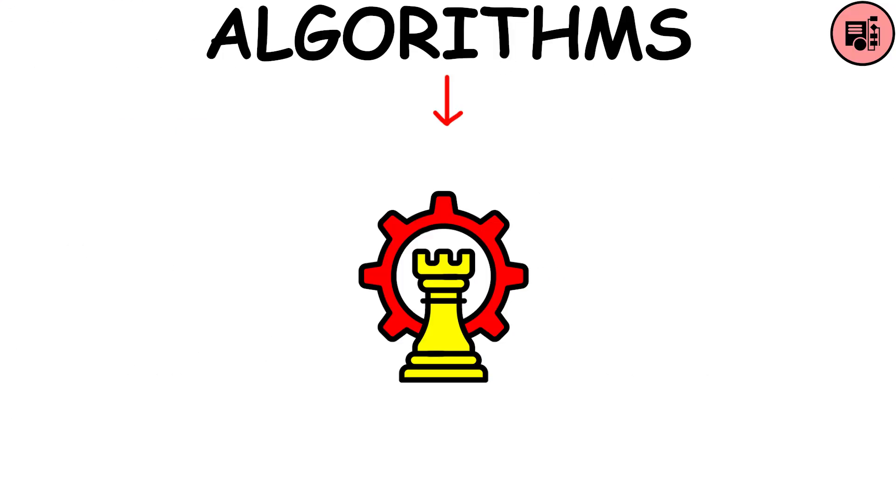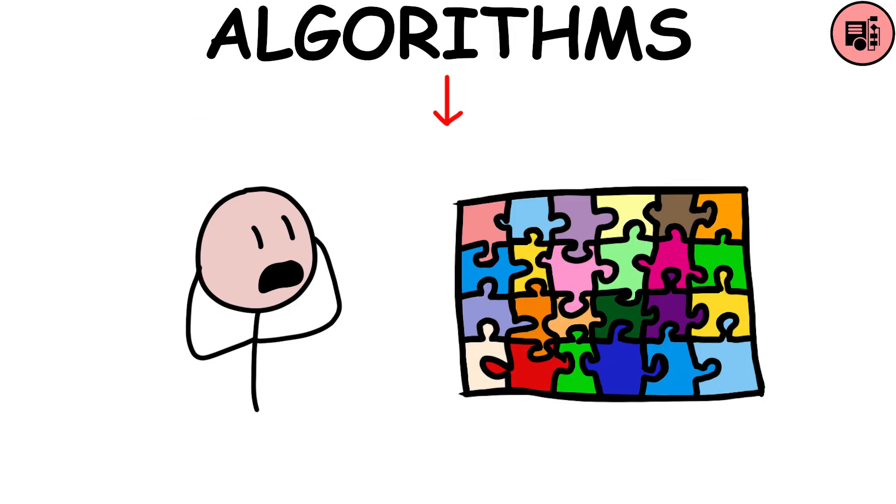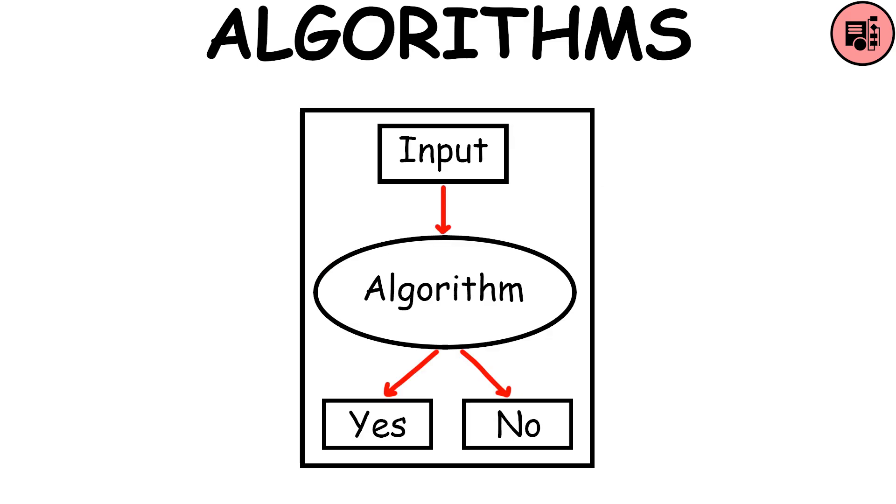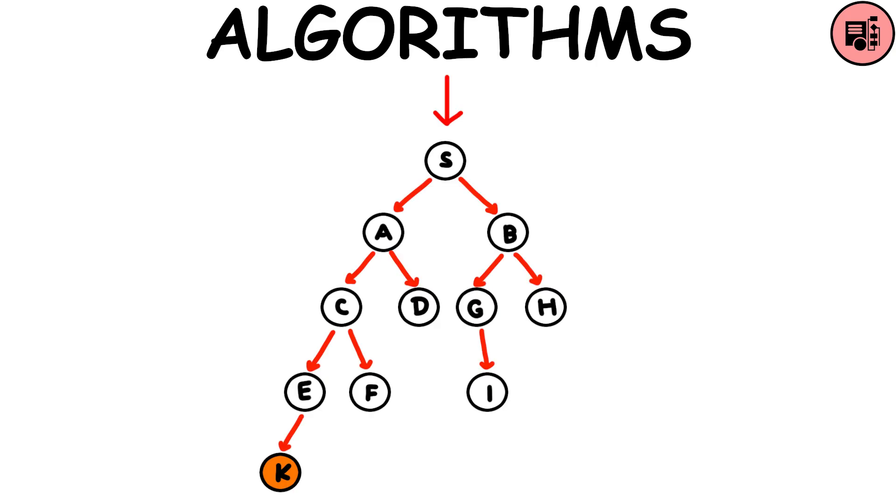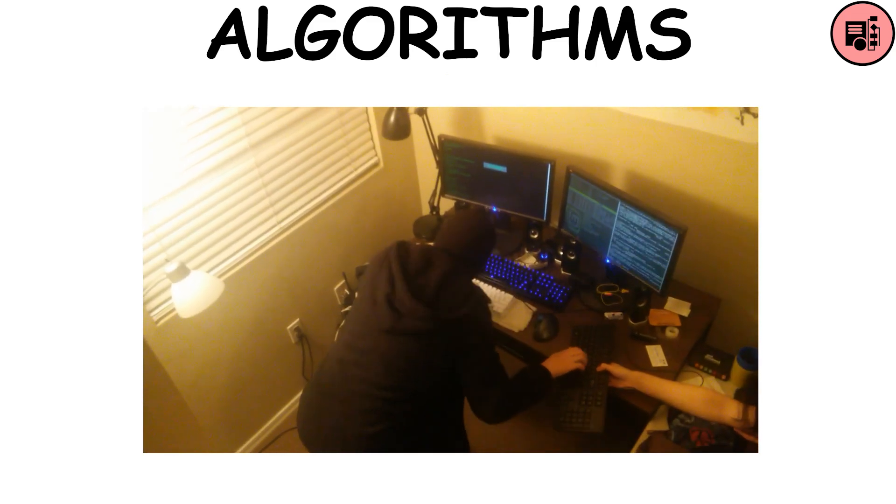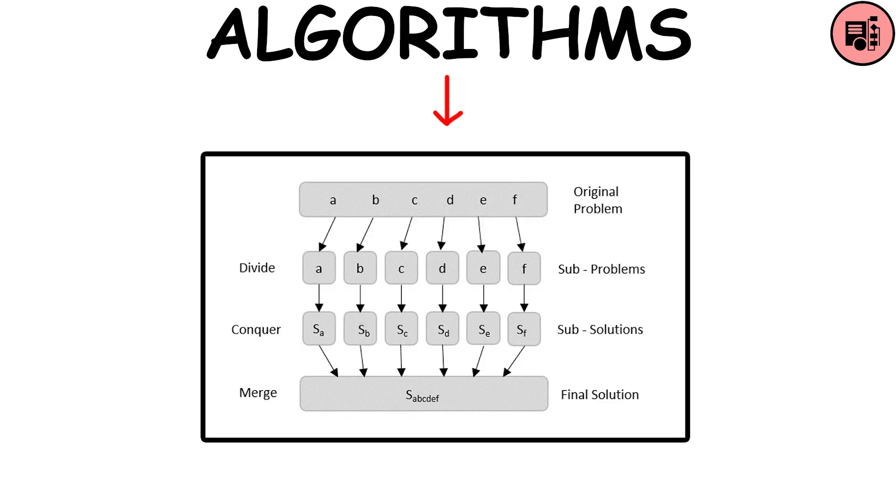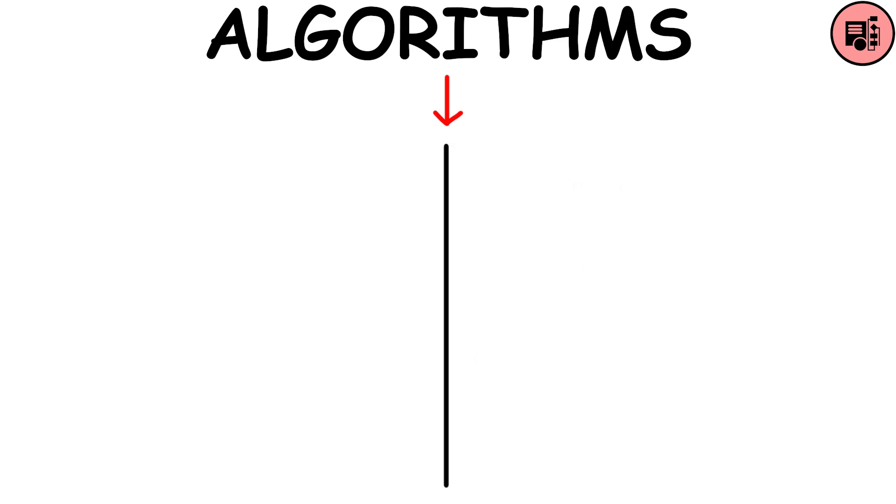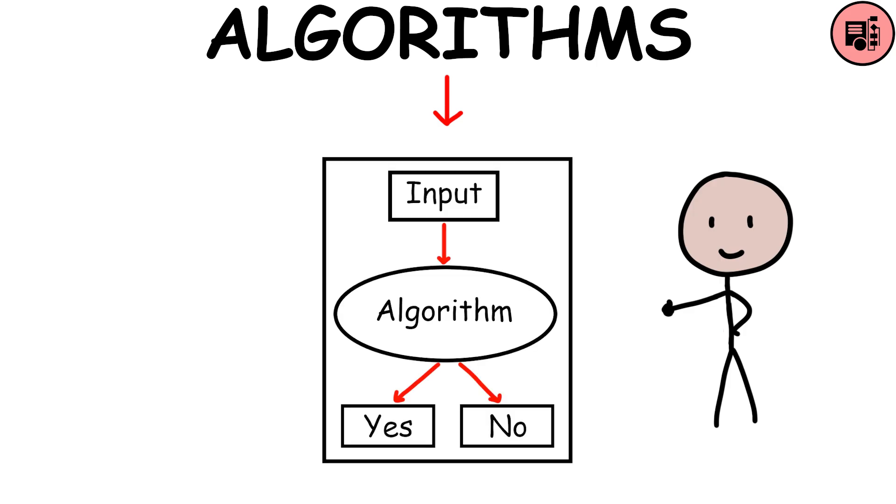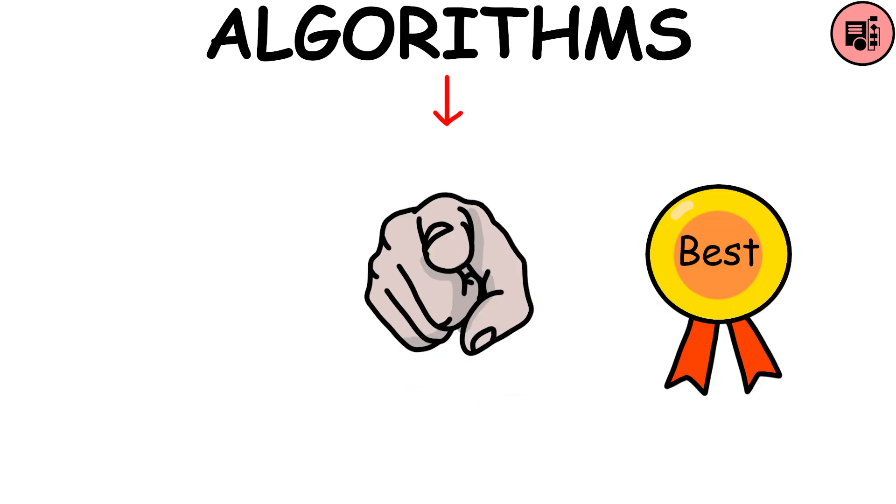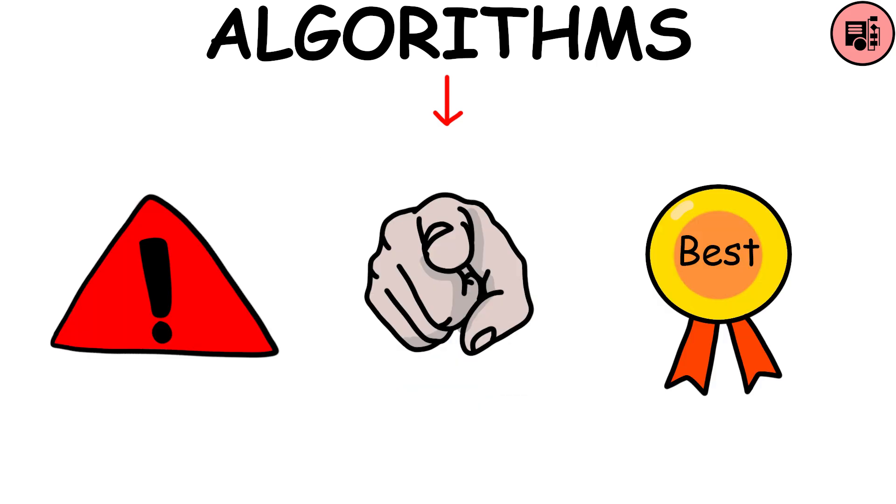Algorithms are like strategies or plans for solving problems. Just like how you might tackle a tough puzzle in different ways, algorithms offer different approaches to tackle computational problems. For example, you might try a brute force approach, where you just try every possible solution until you find the right one. Or you might use a divide and conquer strategy, where you break the problem into smaller parts and solve each part separately. Each approach has its pros and cons in terms of how fast it is and how complicated it gets. By understanding different algorithms, you can choose the best one for the job and solve problems more efficiently.